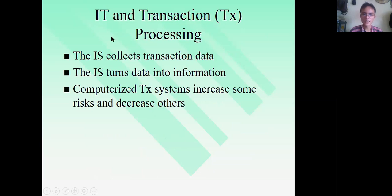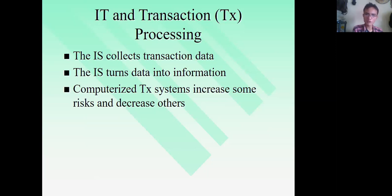How do IT and transaction processing work? It begins with the collection of data — the input stage. If we think of IT, we normally think of the IPO flow: input, process, and output. Data, defined as raw facts, will be gathered, collected, and organized for processing. When data is processed, it becomes information. This information becomes our desired output.